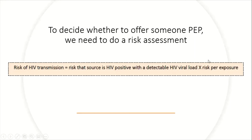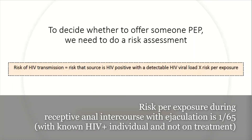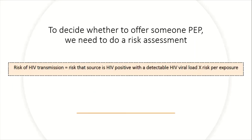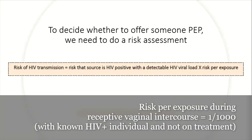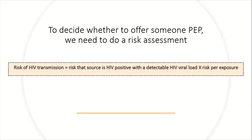When thinking about the risk per exposure, we need to consider what the exposure was — for example, was it receptive anal intercourse with ejaculation, or receptive vaginal sex? These estimates are based on cohort studies and modelling studies. In practice, we will not have all the information to accurately calculate the risk of HIV transmission, but we need a basic understanding of this equation to decide whether it's in the benefit of the patient to have PEP.